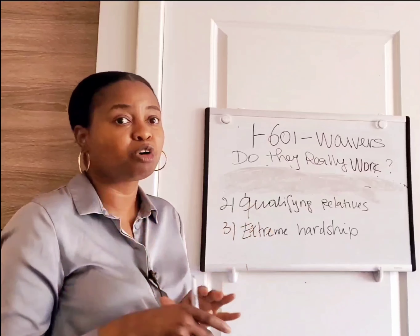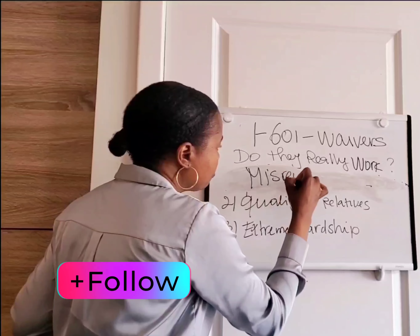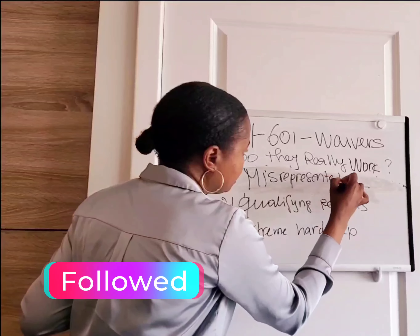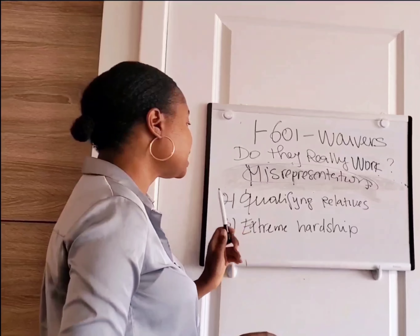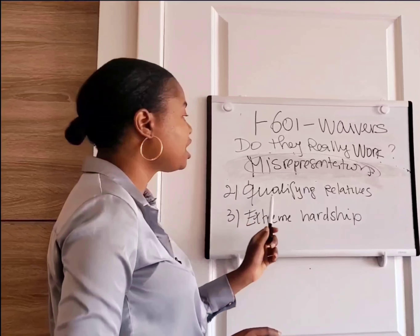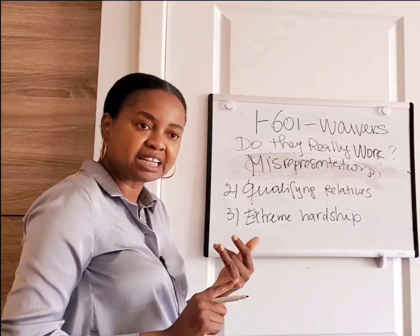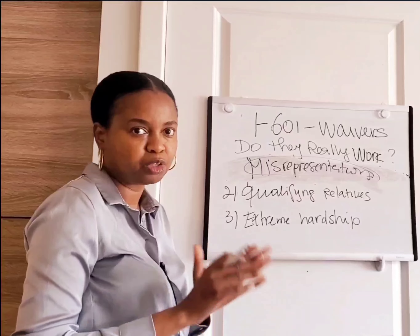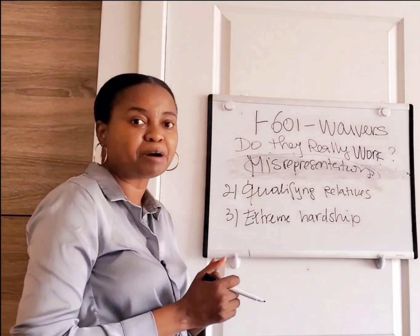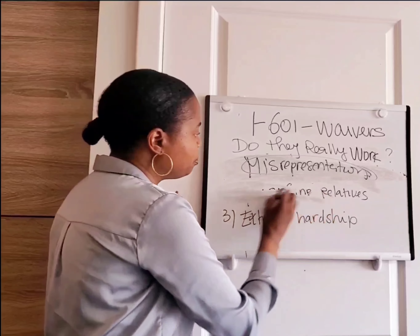In today's video we'll focus more on misrepresentation — fraud and misrepresentation. Once you meet the statutory requirement, the second thing is you have to have qualifying relatives: a U.S. citizen child, spouse, or parent, or a lawful permanent resident child, spouse, or parent. Those are the qualifying relatives for the purpose of applying for a waiver.